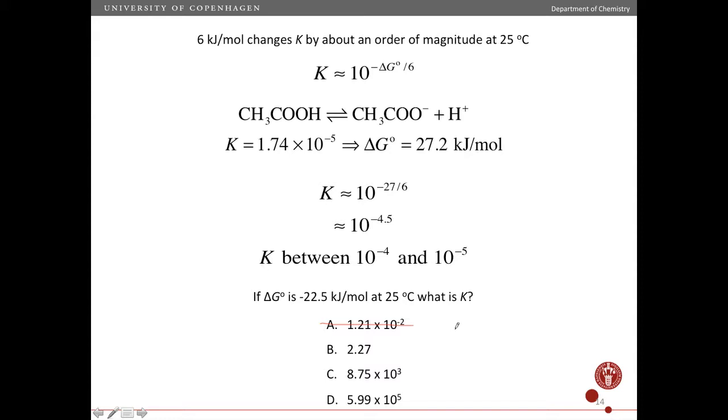So that means we can immediately eliminate this option here because that's an equilibrium constant that's less than one. Now let's see how we use the equation to estimate whether it's this one this one this one or this one.